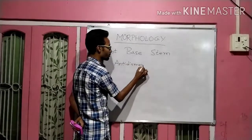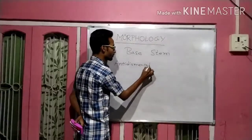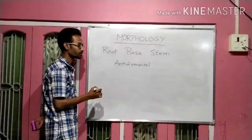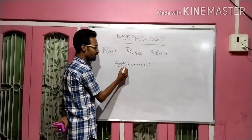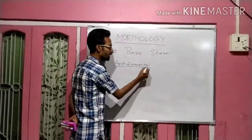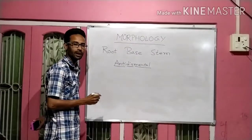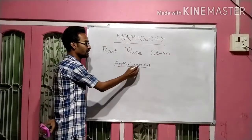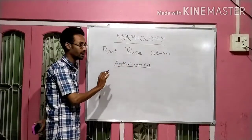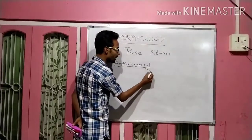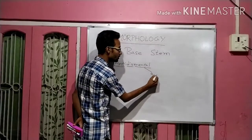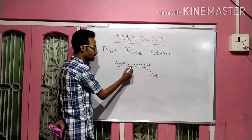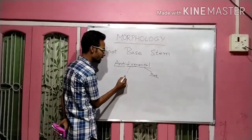Let's take a longer word: 'antidismantle.' Here, anti and dis are prefixed to 'mantle.' Anti and dis are morphemes; mantle is a morpheme. So mental — mantle — is the root, and 'dismantle' is the base.